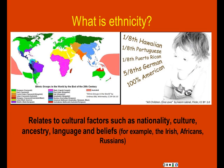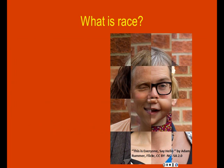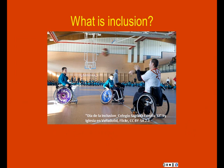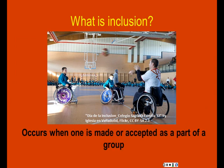What is race? This is a grouping of humans based on skin color and other physical characteristics. Inclusion occurs when one is made or accepted as a part of a group.